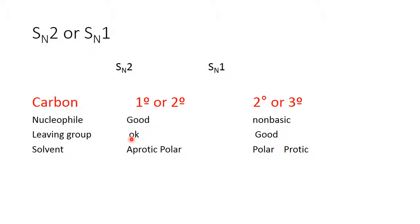The leaving group in an SN2 reaction has to be at least okay — it can't be lousy; if you have a lousy one, it's just not going to proceed. Something like chloride isn't the best leaving group, but it's good enough for an SN2. For an SN1 reaction, you better have a good leaving group. Chloride will work but it'll be kind of slow; bromide would be a lot better, or even water as a leaving group is even better.